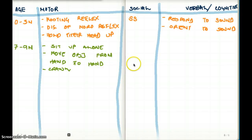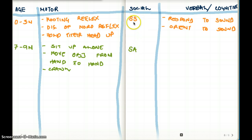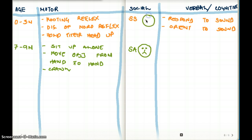Socially, things are going to change. Before we had social smile, but now from seven to nine months they're going to have stranger anxiety. It's easier to remember it as: first they start off all smiley, then they start looking sad. So socially they move from social smile to stranger anxiety.